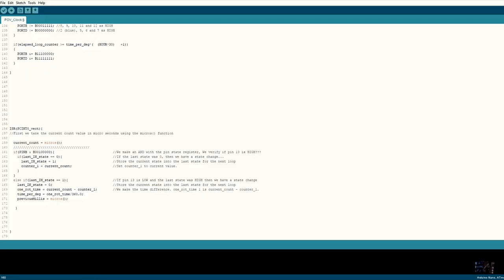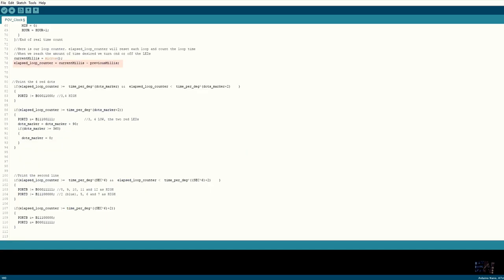OK, back to our code. In the interruption routine, we measure the time it takes to make a full rotation, counting the time between each pulse given by the hall sensor on digital pin 13. In the void loop, we count the time that has passed since the last reset, which occurred at the last hall sensor pulse. So we know the time it takes to make just 1 degree. So we could easily calculate how much time it takes to make any amount of degrees.